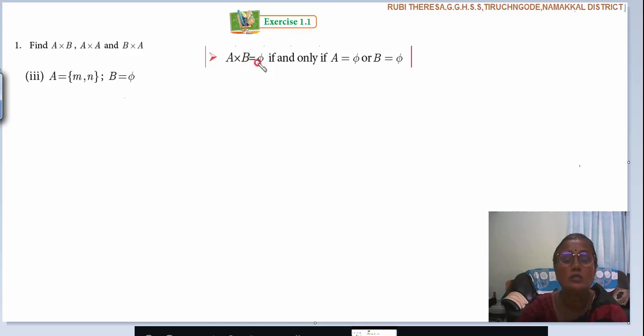So just you see the note. The note they have given this point. A cross B equal to M, T if and only if A equal to M, T or B equal to M, T. Any one, either A or B. Here you see what they have given? B is M, T set.